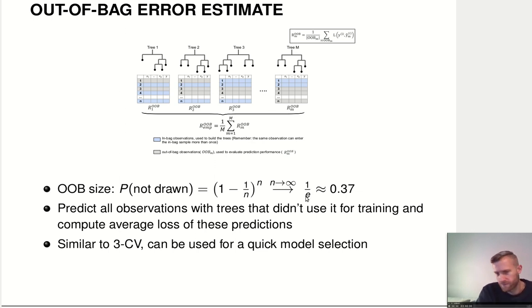Either you know that or you don't, it doesn't matter. The expected size of the out-of-bootstrap sample is about 0.37 of the original data. This is similar to three-fold cross-validation, where we have two-thirds of the data for training and one-third for evaluation.